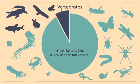Vertebrate animals include fish, amphibians, reptiles, birds, and mammals. All other animals are considered invertebrates.